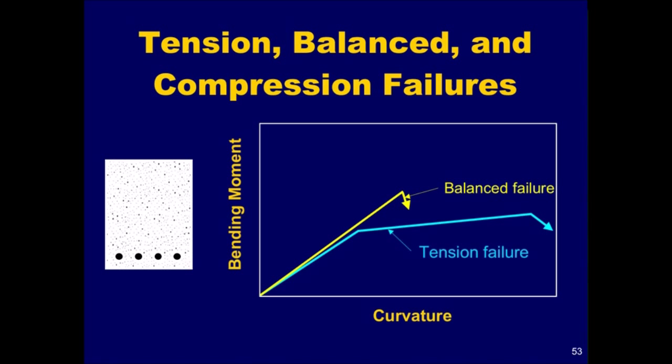Let us now assume that additional reinforcing steel is added to the section, with all other parameters remaining the same. Let us also assume that, at failure, the reinforcing steel yields at exactly the same time the concrete crushes. This is commonly referred to as a balanced failure. In this case, the strain in the extreme compression fiber of the concrete reaches the assumed crushing strain of 0.003, at the same time that the strain in the reinforcing steel reaches the yield strain, epsilon y.